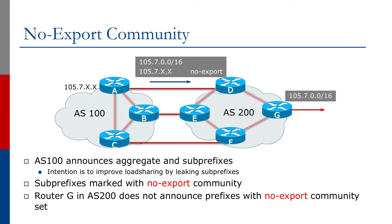Router G will spot the noexport community and not announce these prefixes to any other operator it connects to. The intention is to implement traffic engineering between AS100 and AS200 without leaking local traffic engineering prefixes to the global internet. The default free zone in the global internet is a very large number of prefixes — 660,000 in October 2017 — and this number is only growing, mostly caused by traffic engineering prefixes leaking out into the wider internet. So the noexport community is very useful for helping deal with this growing problem.